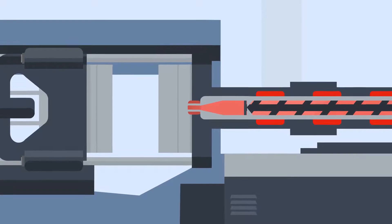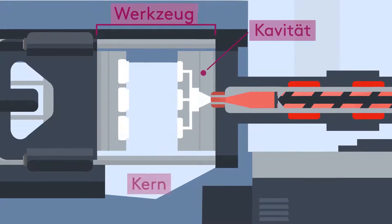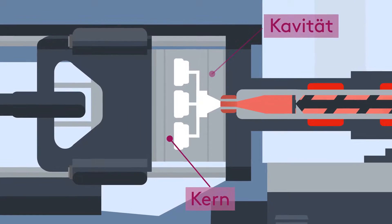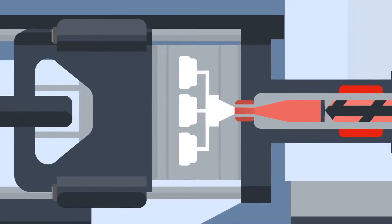Before the molten plastic is injected, the tool, which is usually made up of a fixed half called the cavity and a moving half called the core, closes. When closed, the clamp will apply pressure to the tool, ready for the injection of the plastic.